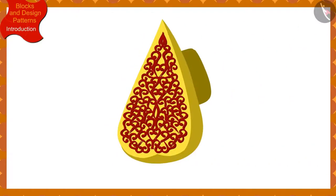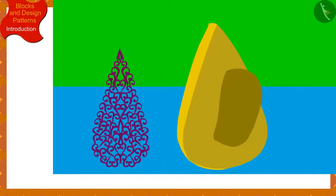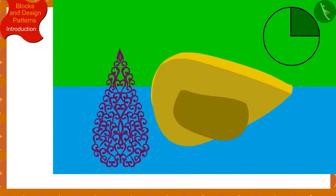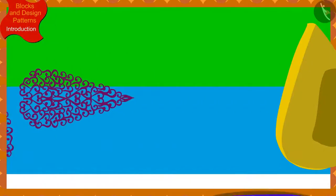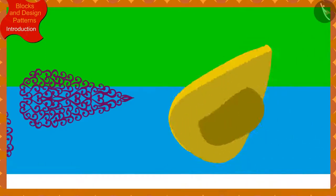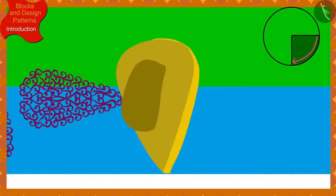Banno returned home and started designing a sari for Chanda. Banno has a block of this design. She first dipped her block in a box of color and made an impression on the sari. She then made a second impression by dipping the block in the box of color again, this time rotating the block a quarter in the clockwise direction. Banno continued to make the design on Chanda's sari by every time dipping the block in the box of color and rotating it a quarter from the previous impression.